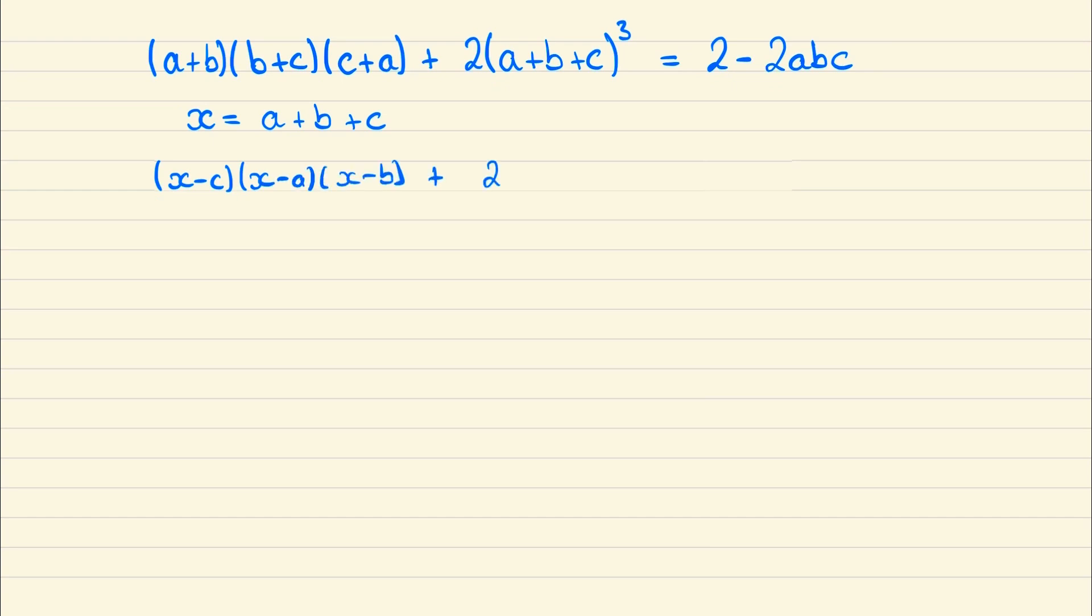Add 2x cubed and we'll also bring the 2abc to the other side. Now expanding these three brackets, we have x cubed minus x squared times a plus b plus c, plus x times ab plus ac plus bc, and then finally minus abc.